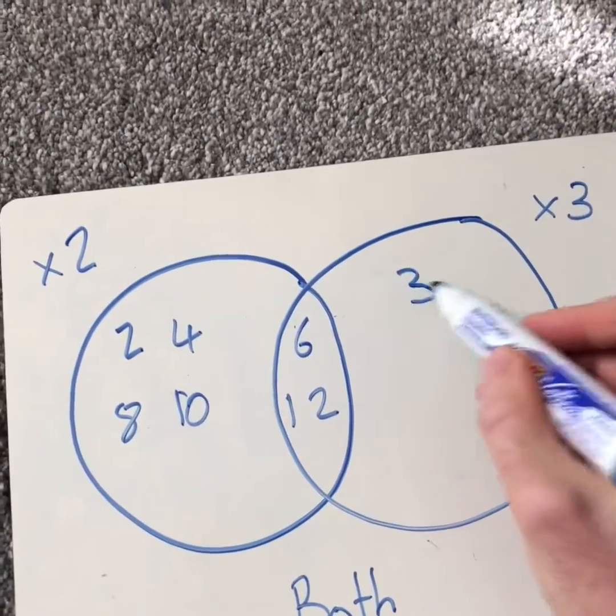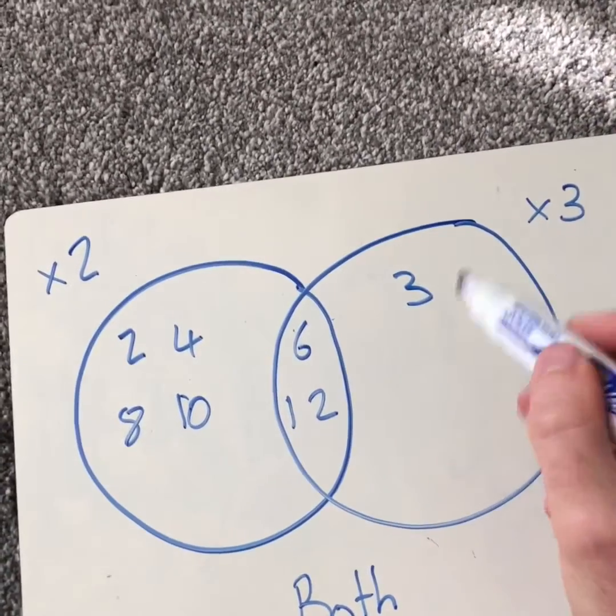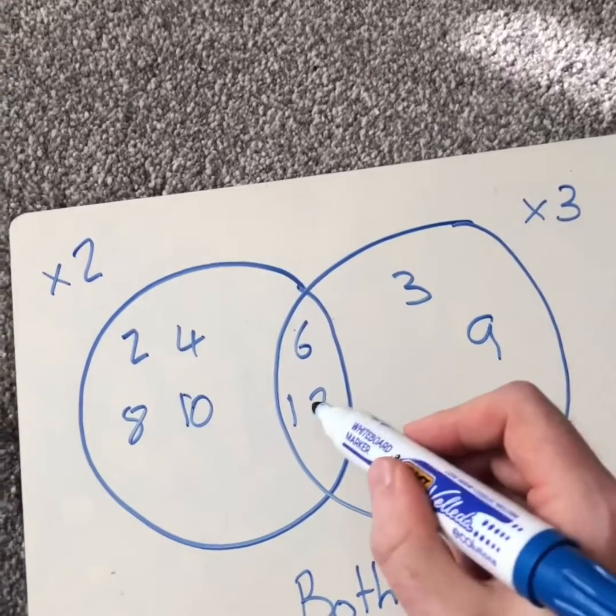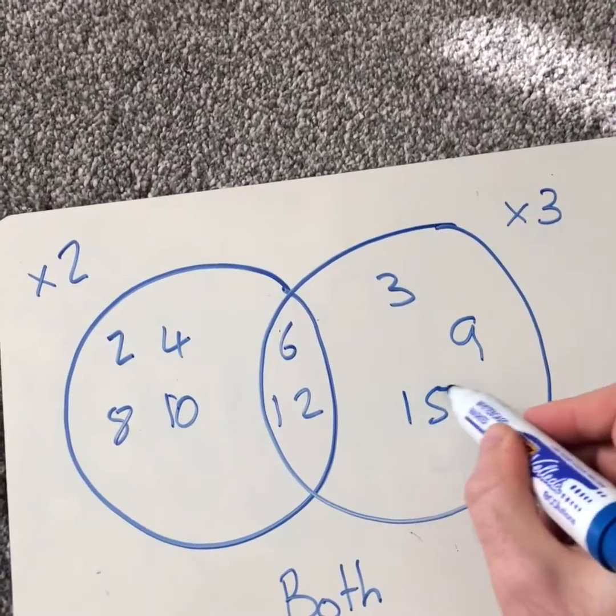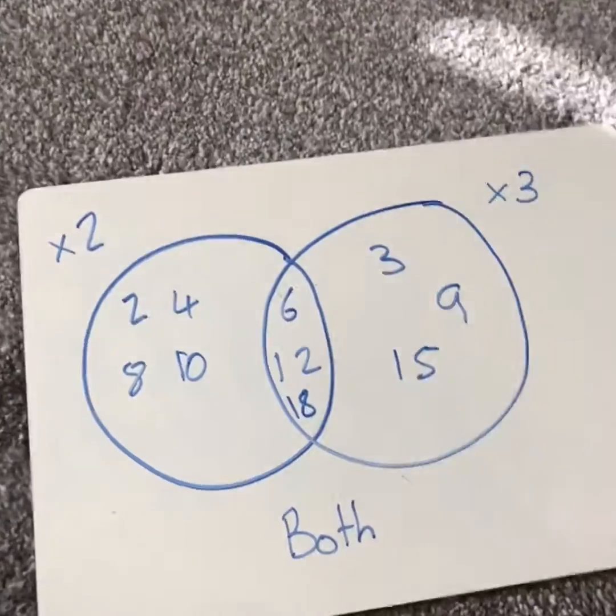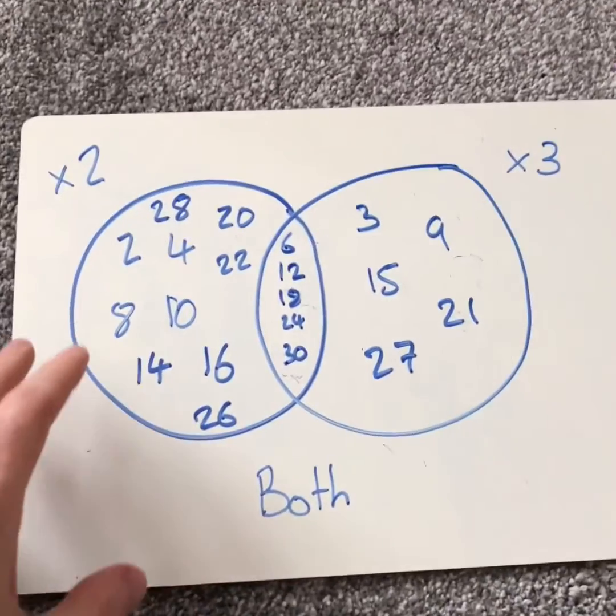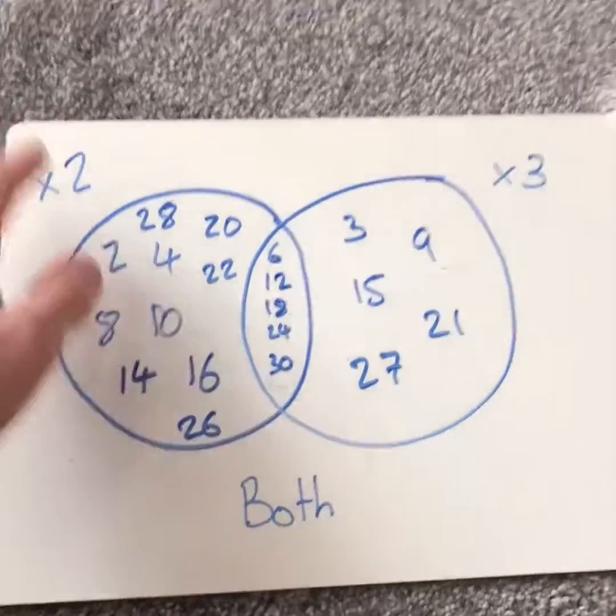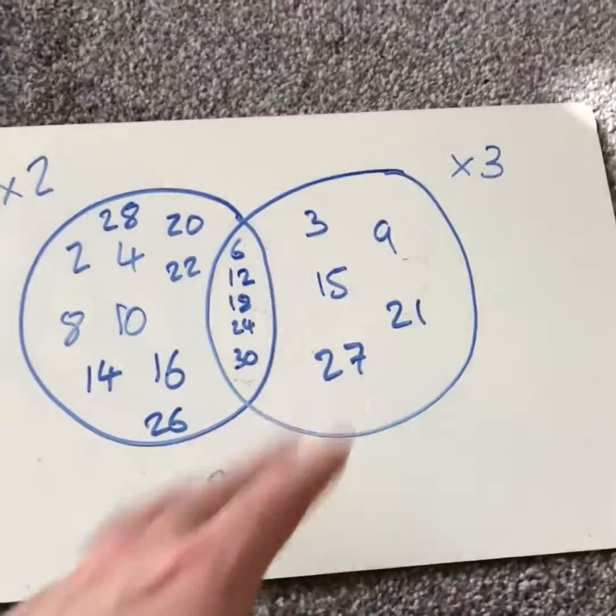Then I can start to fill in the three times table. So we've got three. But six is also in the two times table. So then nine, twelve, fifteen, eighteen. Well, two times nine is eighteen, so that's there. So eighteen would go in the middle too. So I'd usually go up to times ten on both. Two times ten is twenty. Three times ten is thirty.